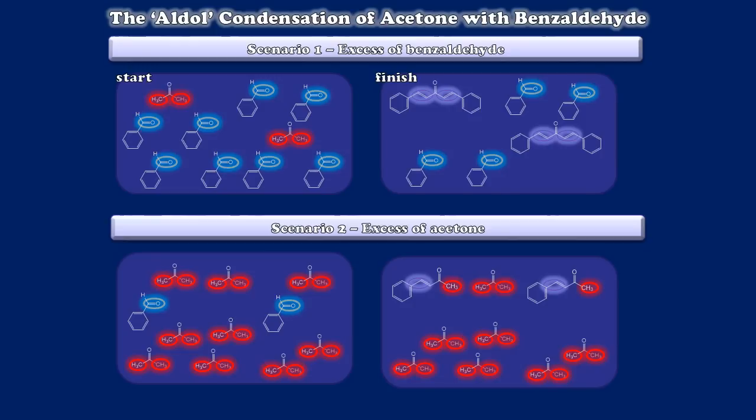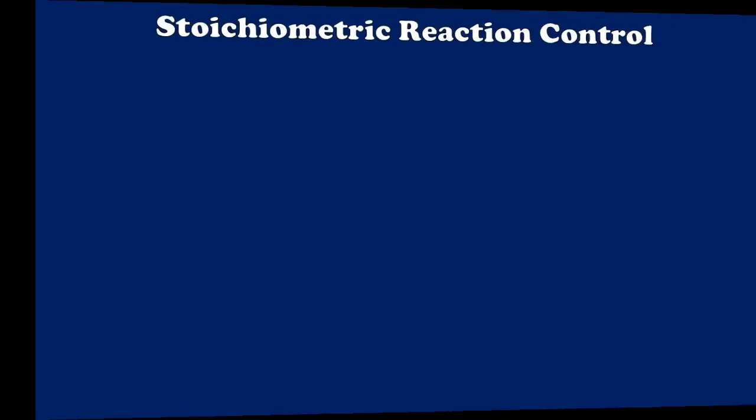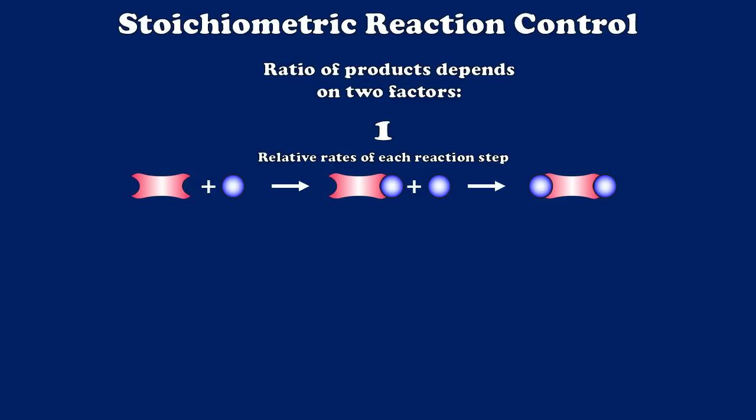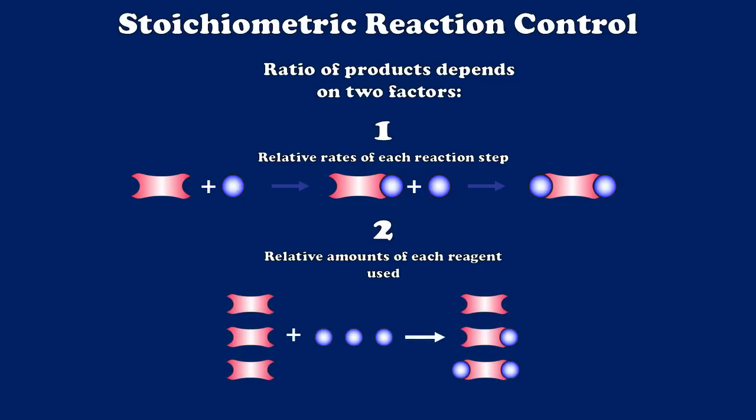In short, we can control which ratio of products form in a reaction like this one based upon two factors. The first one, of course, is the relative rates of each reaction step. If one is much faster than the other, the system becomes easier to control. But when they are both very similar, we have the possibility of making a mixture of products. But the second ingredient is the relative amount of each reagent that is being used. Where equal amounts can create a mixture of product compounds, we know that using large excesses or large deficiencies can change the identity of the primary product of the reaction. We are going to be using that this week in lab.